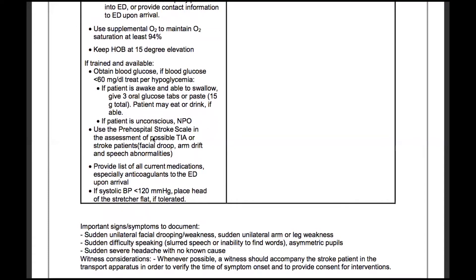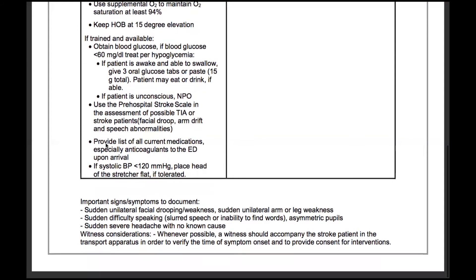Use a pre-hospital stroke scale in the assessment of possible TIA or stroke patients. We use the Cincinnati stroke scale to assess for facial droop, arm drift, and speech abnormalities. Provide a list of all current medications, especially anticoagulants, to the emergency department upon arrival.